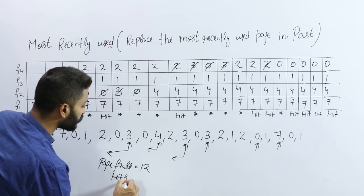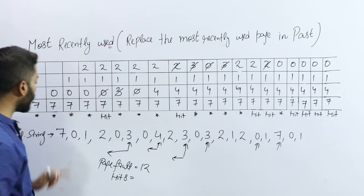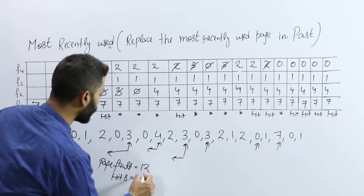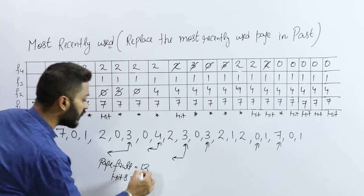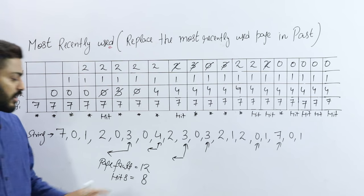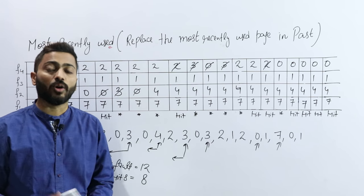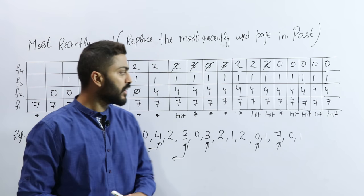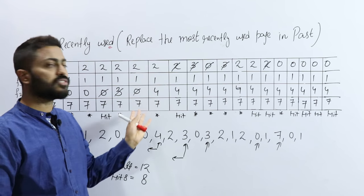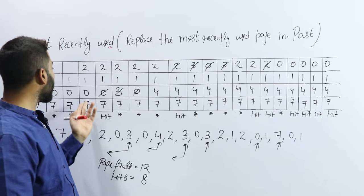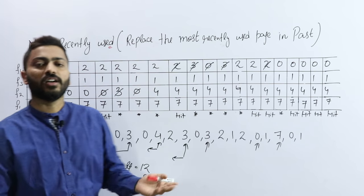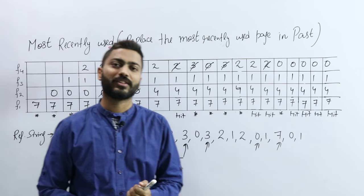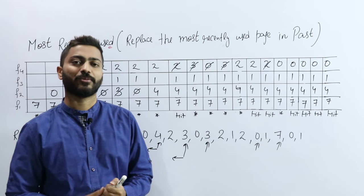And page hits — 1, 2, 3, 4, 5, 6, 7, 10, 11, 12 — page faults are 12 and page hits are 8. So this is how the Most Recently Used method works. You can try it with the number of frames being 3; here we took 4 frames. So this is all about the MRU method. Thank you.